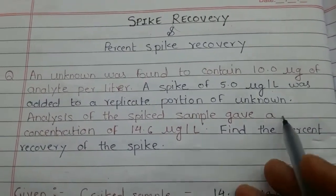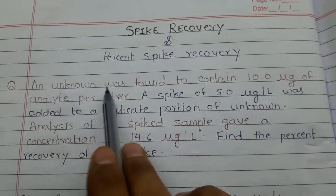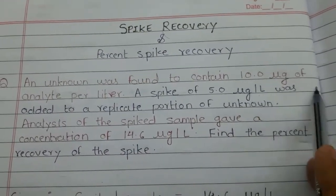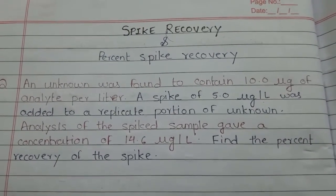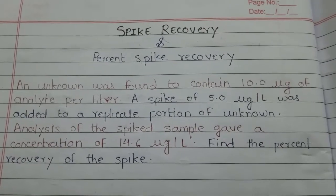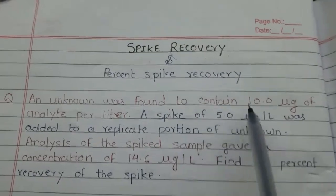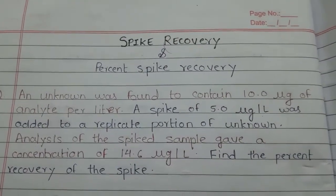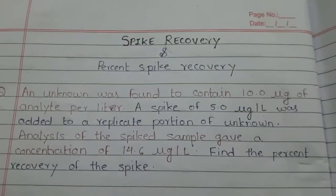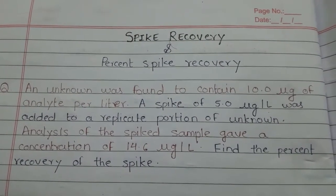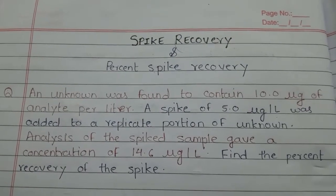Let's begin with an example. The question is: an unknown was found to contain 10 microgram of analyte per liter. So basically here we have one liter of unknown solution, and when we analyze this unknown solution we found that it contains 10 microgram of analyte. Next, a spike of 5 microgram per liter was added to a replicate portion of the unknown.